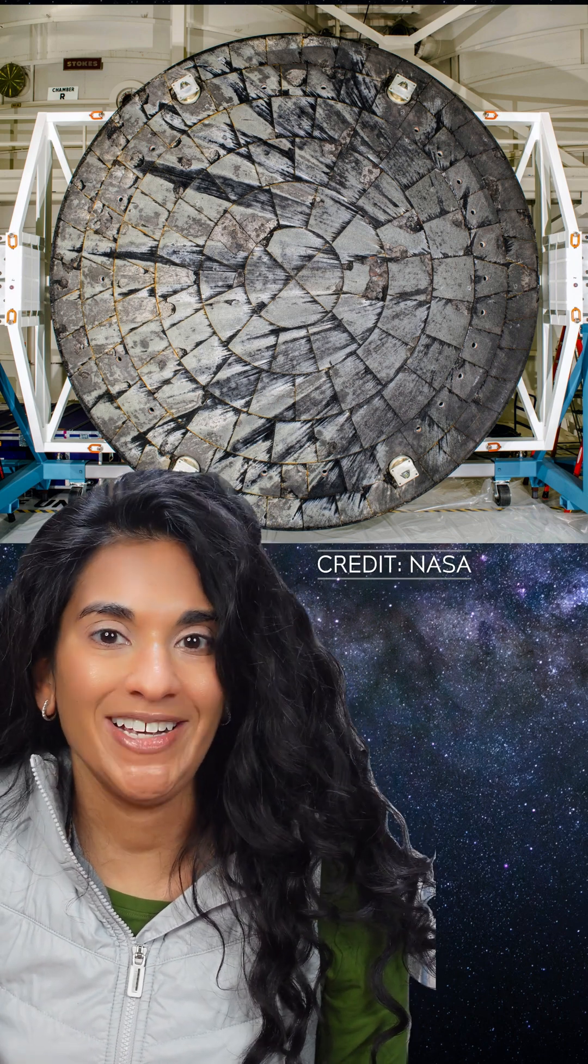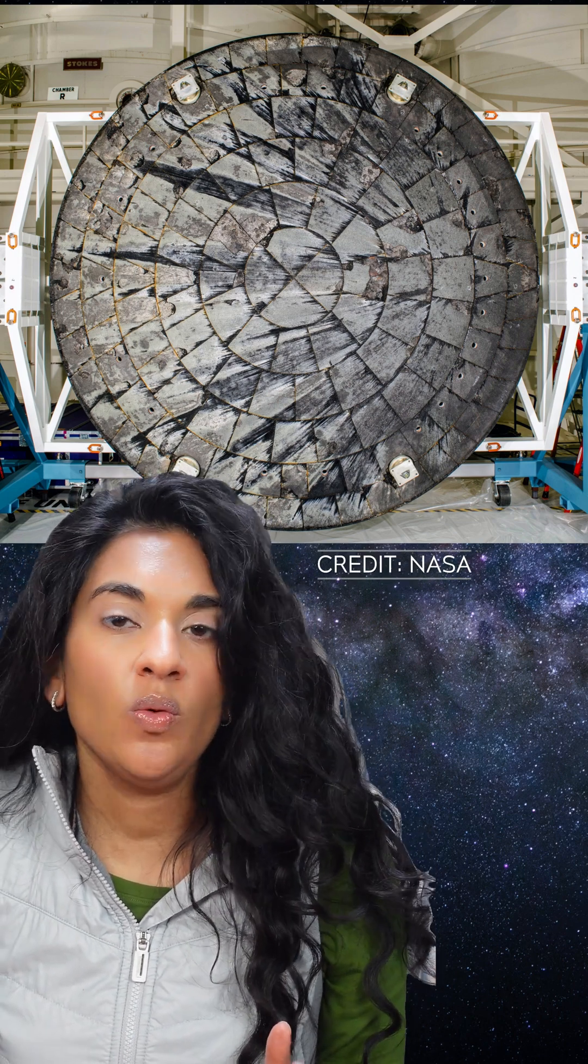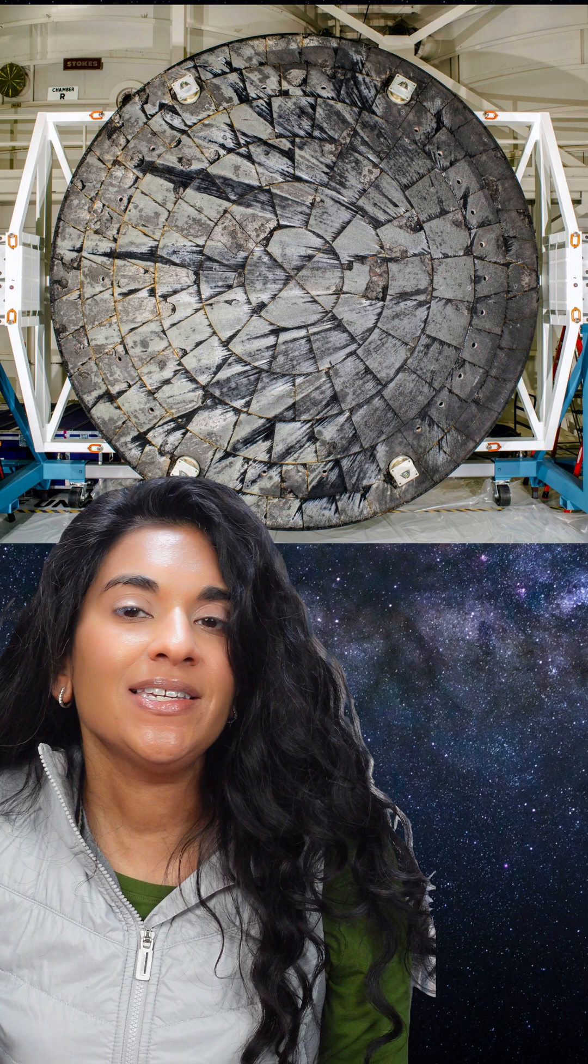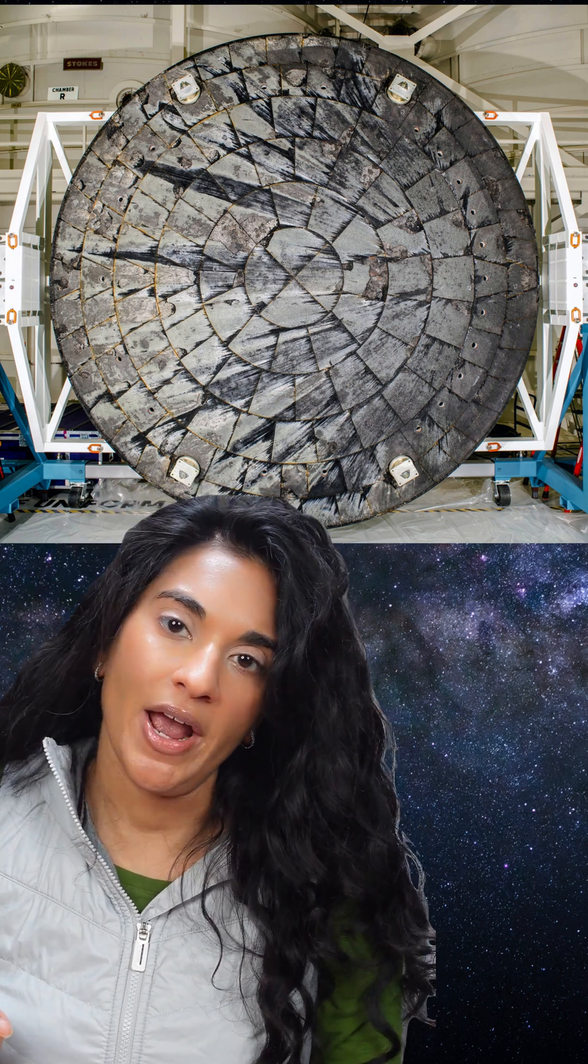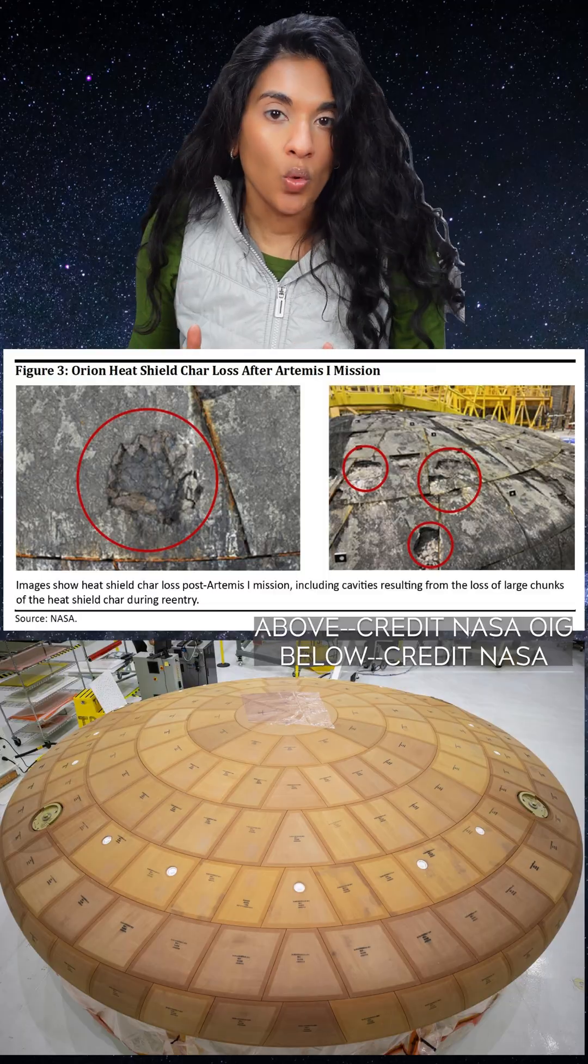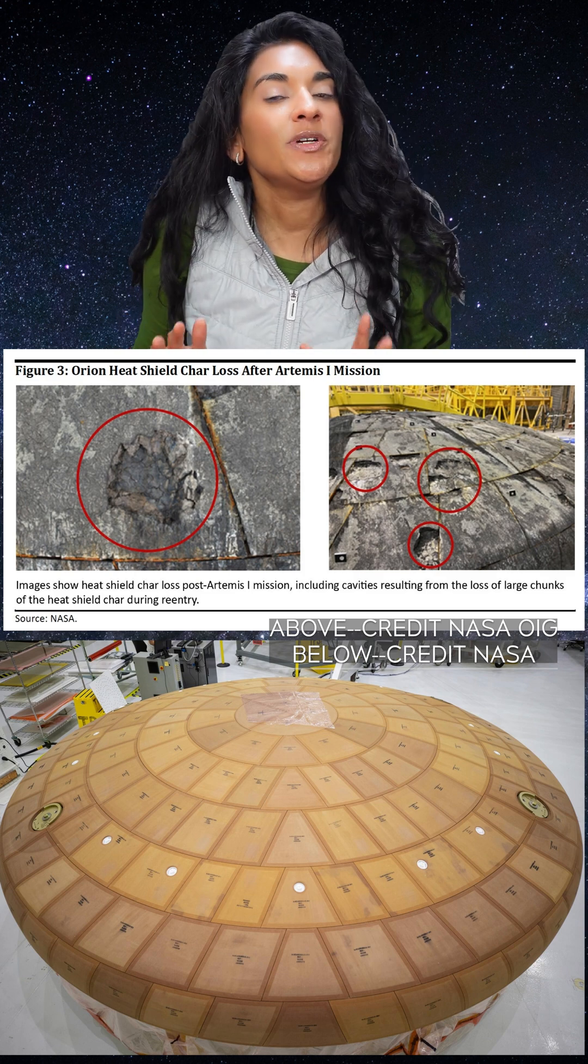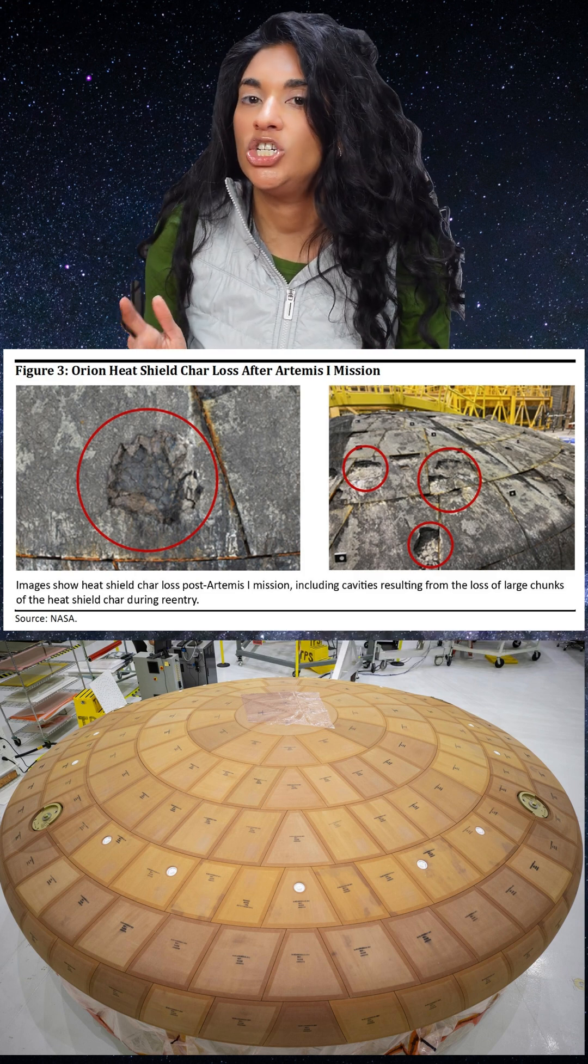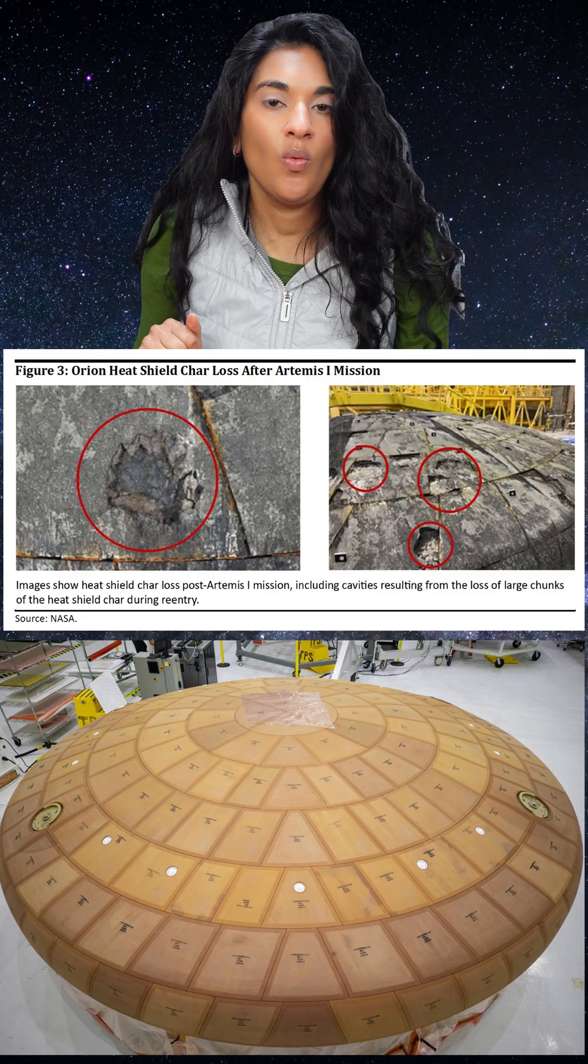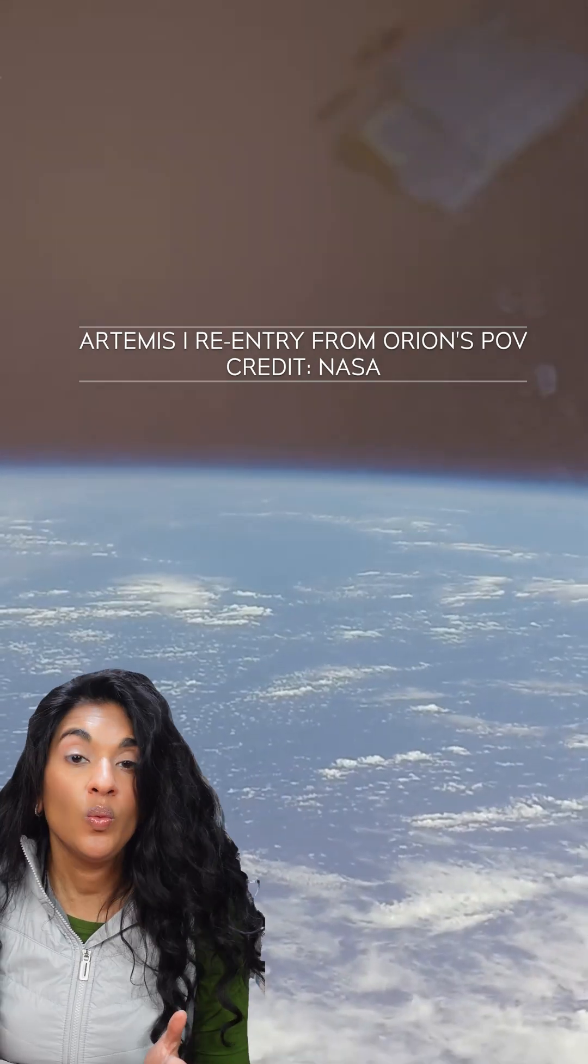We finally know what's wrong with Orion's heat shield. After Artemis 1, which ended two years ago, NASA noticed that the heat shield of Orion had behaved strangely. It worked, and astronauts would have been fine if they'd been on board, but the heat shield material was cracking and coming off in chunks. NASA needed to figure out what was going on. And now we know.